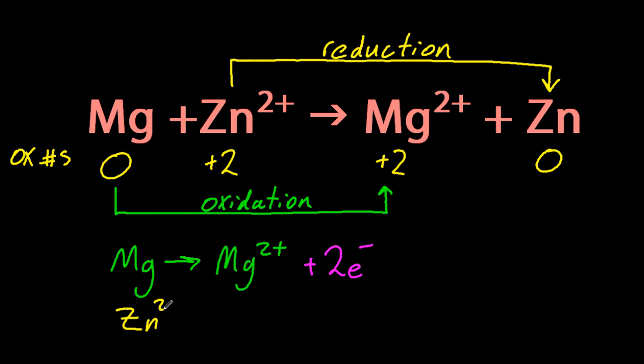And for the zinc, that half equation also needs two electrons. Now when you're doing this, the electrons should be on opposite sides. Otherwise you've messed it up. Smashing. So those are the two half equations for that reaction.